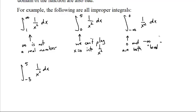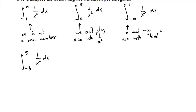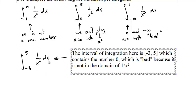0 is bad because it's not the domain. Negative infinity is bad because it's not a real number. Now, sometimes it's very, very deceptive. Negative 3 goes in here just fine. 5 goes in here just fine. This is an improper integral because the interval of integration is everything from negative 3 up to 5, which contains the number 0, which is bad, as we said before.